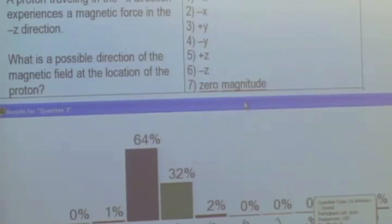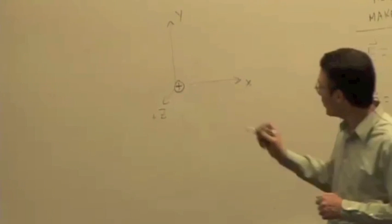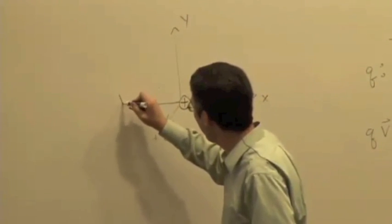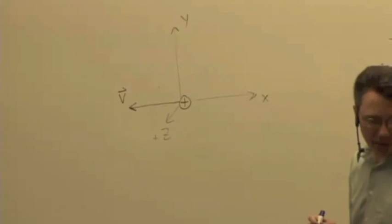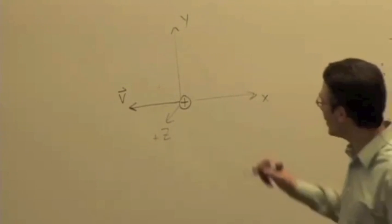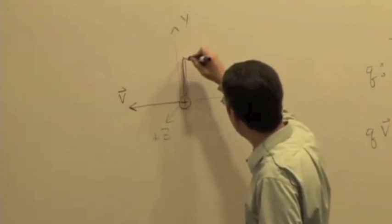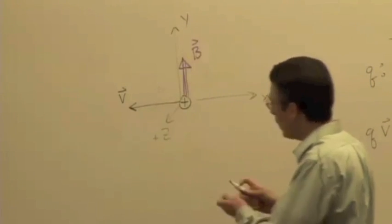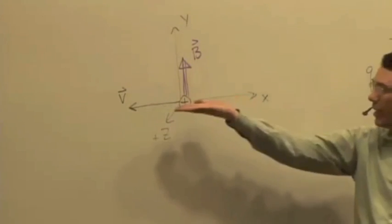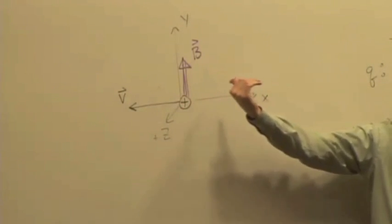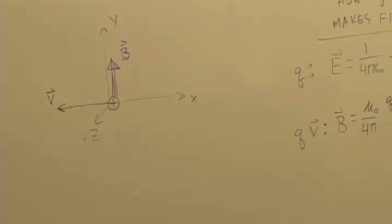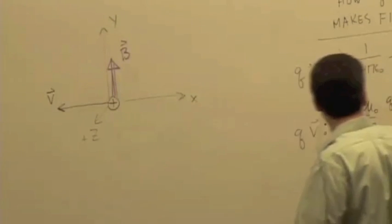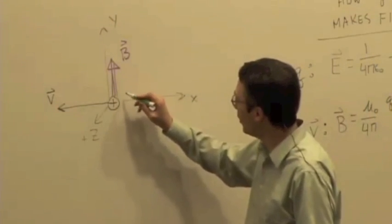If we have a proton moving in the negative X direction, and we have a magnetic field in the positive Y direction at that location, will that give us the correct direction of the force? We say V cross B — thumb points in the negative Z direction, which is what we stated. So force in the negative Z direction — that works. It's multiplied by a positive charge, so no flipping of the hand here.